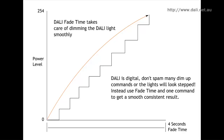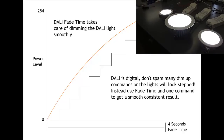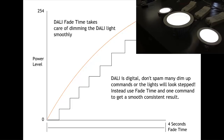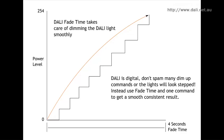What a fade time does with DALI is it creates a smooth curve from point A to point B. So if you have the lights halfway and you say you want to dim all the way down and have it take four seconds, the light itself has the smarts on board to dim all the way down to that bottom point smoothly without you having to calculate anything. It's all done in the light, and this prevents any visual flickering or flashing.